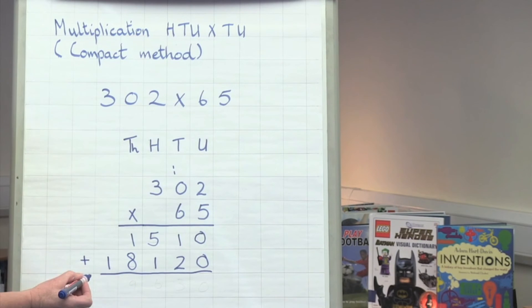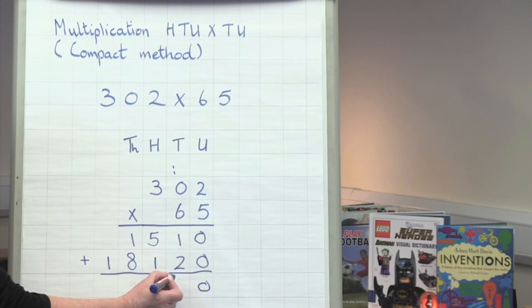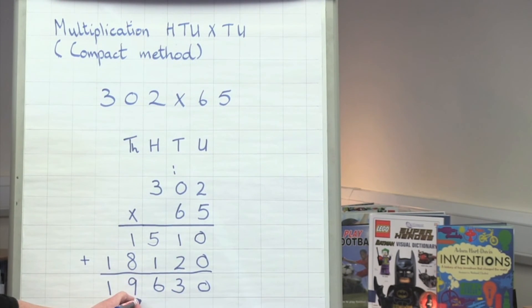I add both parts of the answer. 0, 2 and 1 is 3, 5 and 1 is 6, 8 and 1 is 9, 1. Count three digits, 1, 2, 3 and put in my comma to separate the thousands. 19,630 is my answer.